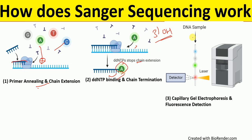The DNA sample passes through capillary gel electrophoresis. Smaller fragments move faster and larger fragments move slower. The ddNTPs are fluorescently labeled, so this fluorescence is detected by our Sanger sequencing machine.